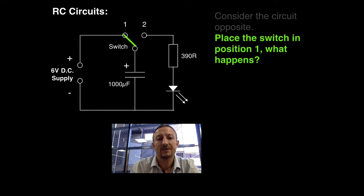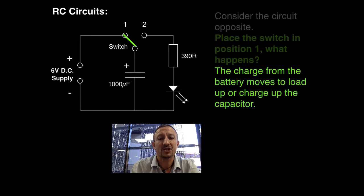So hopefully what you will have seen is that the capacitor will begin to charge. Charge will move from the negative terminal of the 6 volt DC supply and push itself onto the bottom plate of the capacitor. Now what will happen is that will charge up until it is then fully charged. At that point there will be no net movement of charge onto the plate which means that the 1000 microfarad capacitor will remain at around 6 volts.